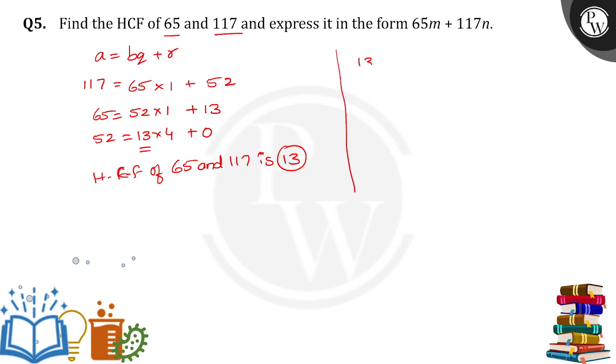Now 13 we have to express in this form, right? How we can do that? 13 can be written as 65 minus 52 into 1. From step number 1, we replace this.